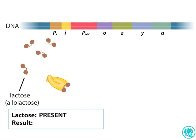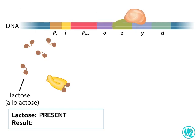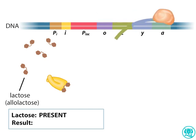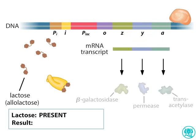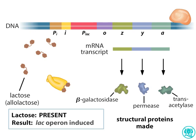Without the repressor blocking its way, RNA polymerase is now able to transcribe the structural genes. Thus, in the presence of lactose, the lac structural genes are expressed. The proteins encoded by the lacZ and lacY genes participate in the metabolism of lactose.